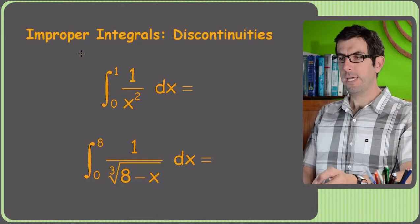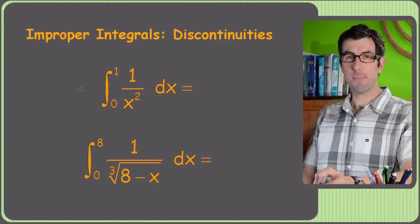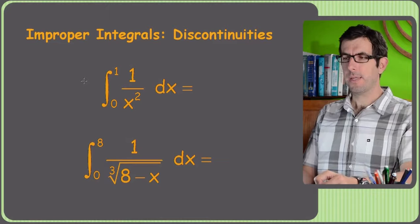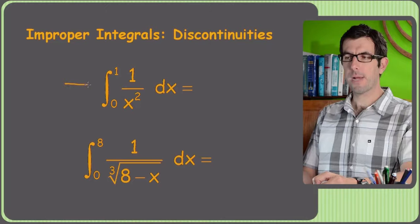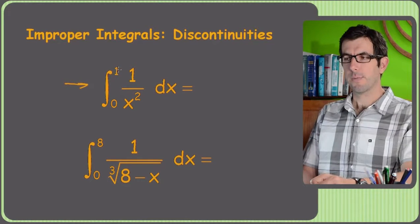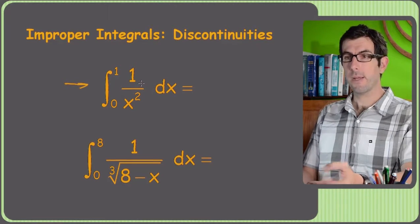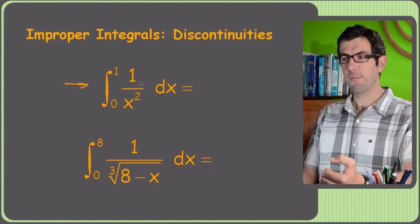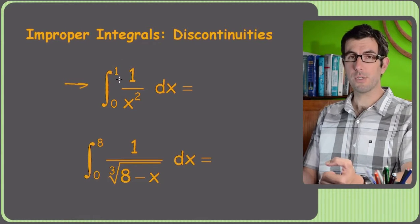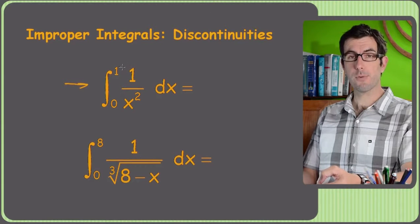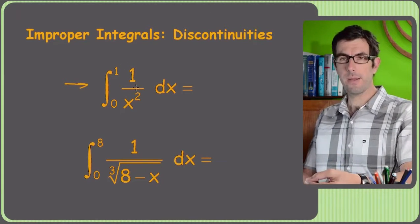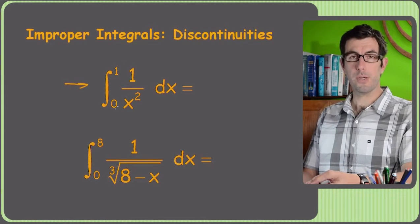This is the other type of improper integral. These are harder to spot, and that's kind of the worst thing about them. They're somewhat easier to do because there's no infinities involved. The problem is that this is improper for a very subtle reason. If you integrate this thing and go to plug in — or actually if you plug those numbers into the original function, which is not something you usually do.